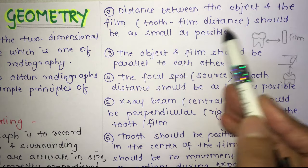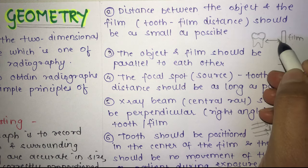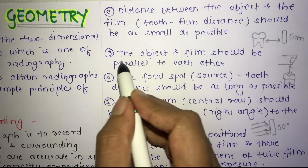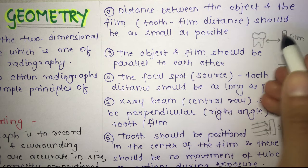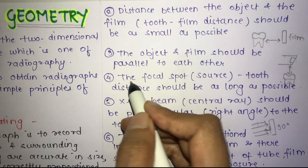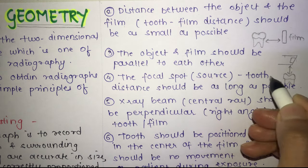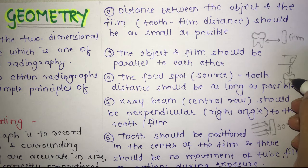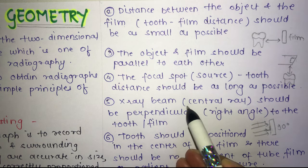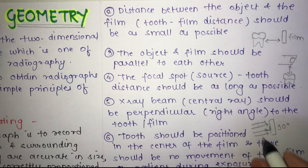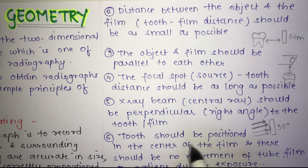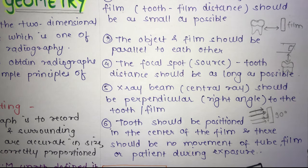The second principle is that the distance between the object and the film — the tooth-film distance — should be as small as possible. The third is that the object and the film should be parallel to each other. The fourth is that the focal spot-to-tooth distance should be as long as possible. The fifth is that the x-ray beam should be perpendicular to both the tooth and the film. The sixth is that the tooth should be positioned in the center of the film, and there should be no movement of the tube, film, or patient during exposure.